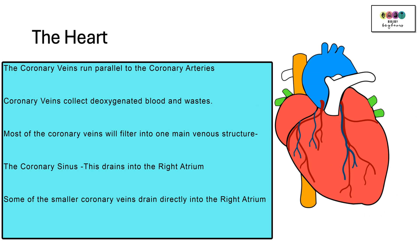The coronary veins run parallel to the coronary arteries. They collect the deoxygenated blood and the wastes. Most of the coronary veins filter into one main venous structure called the coronary sinus, which eventually drains into the right atrium, though many of the smaller coronary veins drain directly into the right atrium.